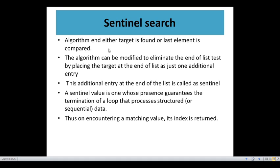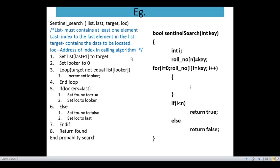We are running the algorithm and either the target is found or the last element is compared, and then we will stop. Here we are adding the target element at the end of the list, meaning last plus 1. Last is our index to the last element in the list, and last plus 1 means we are adding this target at the end of the list.